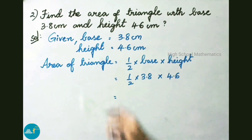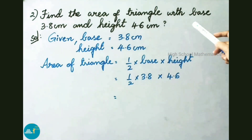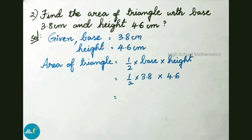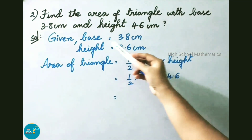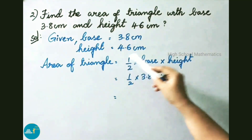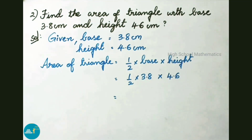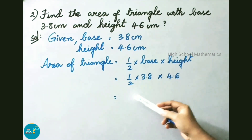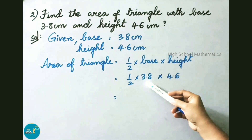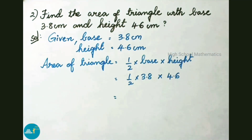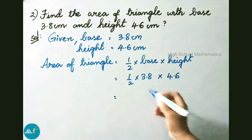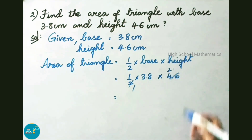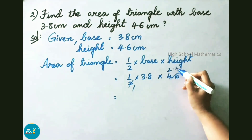See now question number 2. Find the area of a triangle with base 3.8 cm and height 4.6 cm. Given: base = 3.8 cm, height = 4.6 cm. Area of triangle equals to half into 3.8 cm into 4.6 cm. After cancellation, we get 2.3 times 4.6.